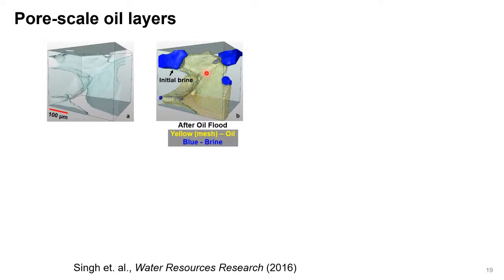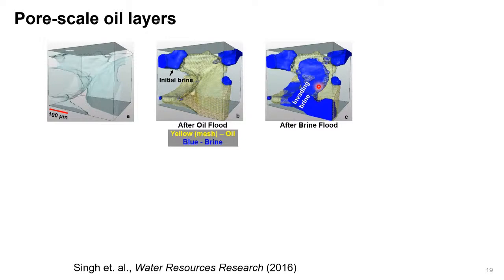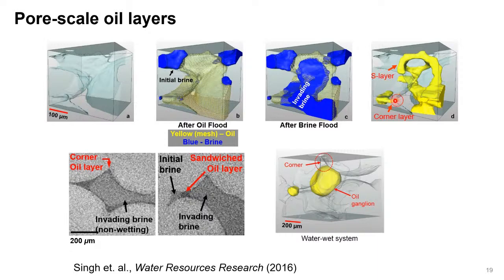After the wettability changes and you inject water, you can see from the bulging of the interface that water is the non-wetting phase. It leaves behind oil layers — either in corners or sandwiched between two water bodies. The grayscale image clearly shows layers in corners or between initial brine and invaded brine. This is clearly different from the water-wet system, where oil sits in the middle of the pore bodies. These layers were conceptually known and used in models — we were happy to visualize them for the first time non-destructively in rock materials.